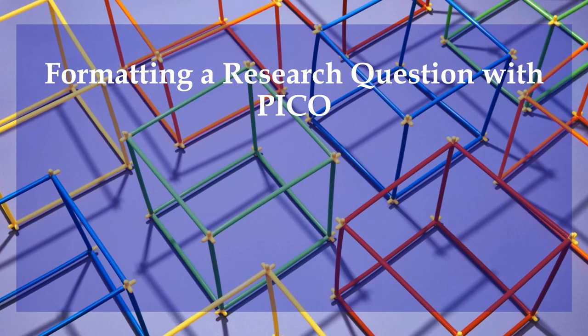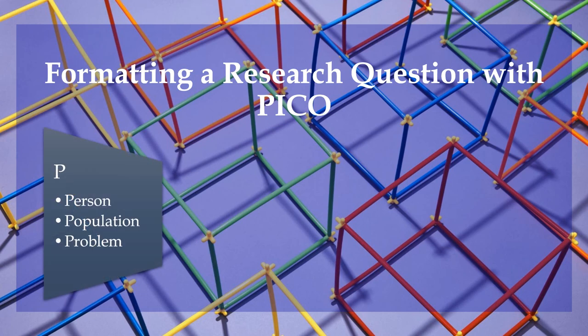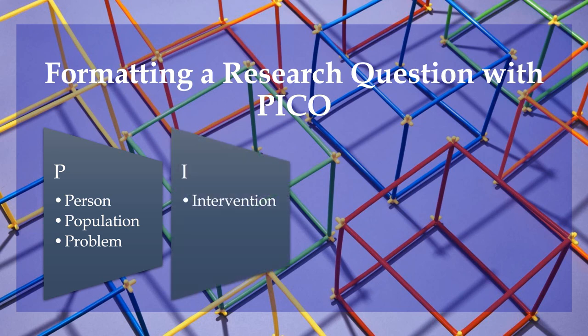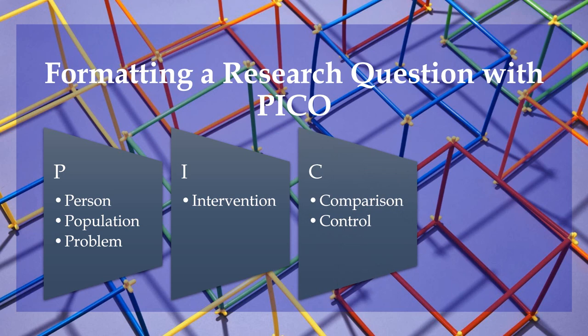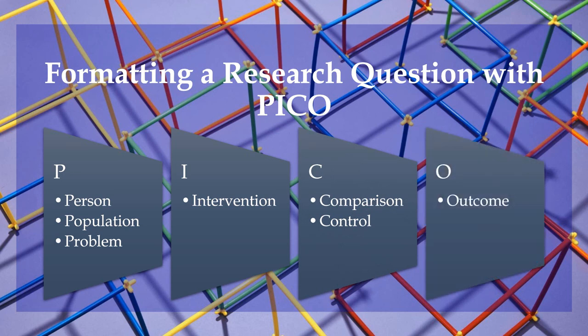The four elements contained within PICO are P, which can stand for person, population, or problem depending on the context of your question; I for intervention; C, which could mean comparison or control; and O, which stands for outcome.